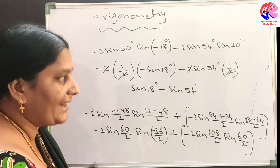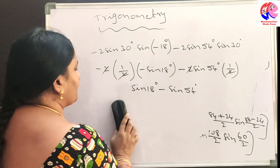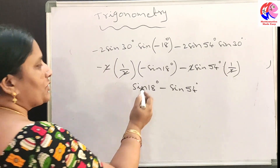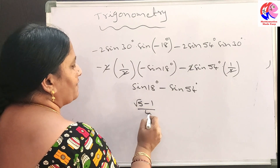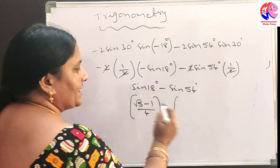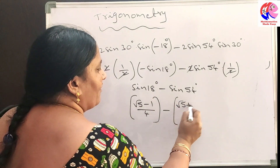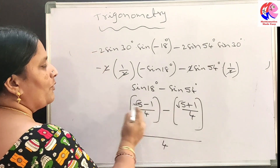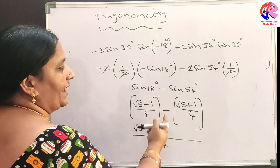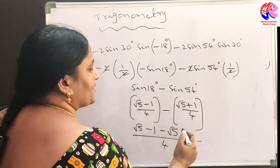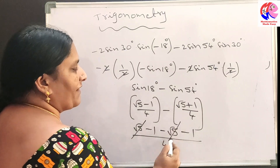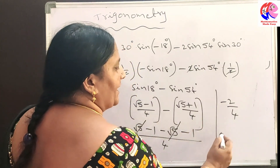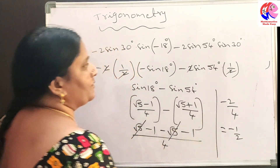We know that sin 18 degrees equals root 5 minus 1 by 4, and sin 54 degrees equals root 5 plus 1 by 4. Substituting: root 5 minus 1 by 4 minus root 5 plus 1 by 4. Since the denominators are the same, we simplify the numerators: root 5 minus 1 minus root 5 minus 1, which gives minus 2 by 4, equal to minus 1 by 2. Thank you.